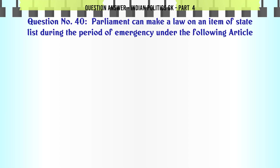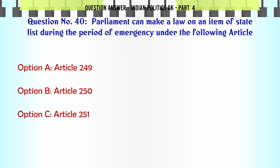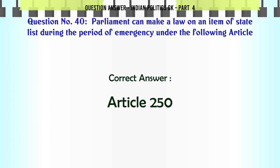Parliament can make a law on an item of the state list during the period of emergency under which article? A. Article 249. B. Article 250. C. Article 251. D. Article 252. The correct answer is Article 250.